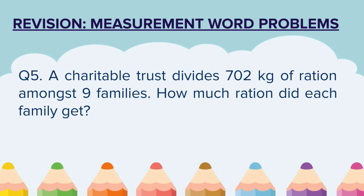Question 5. A charitable trust divides 702 kg of ration amongst 9 families. How much ration did each family get? Here there is some ration which is divided among 9 families. Divided means every family gets a portion of 702 kg. We have to find how much each family got.